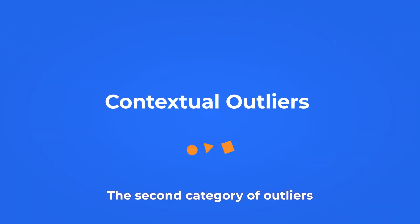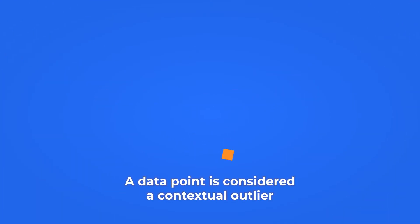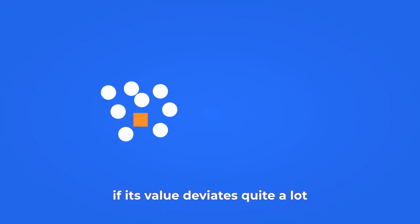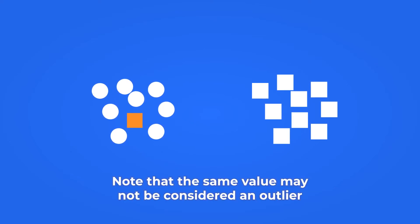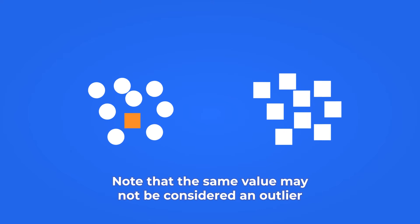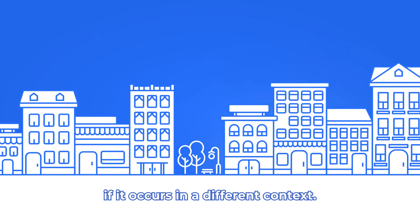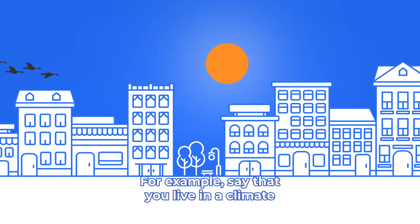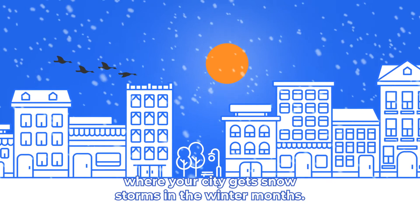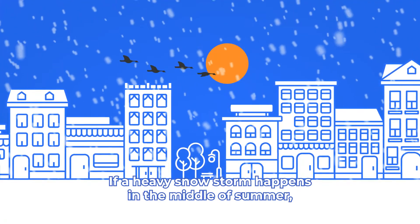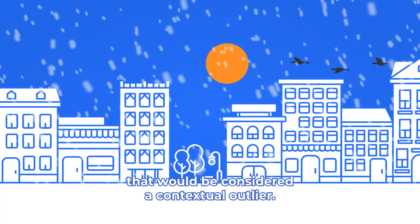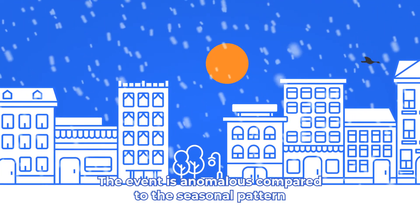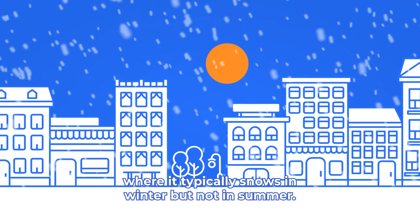The second category of outliers is contextual or conditional. A data point is considered a contextual outlier if its value deviates quite a lot from the rest of the data points that are in the same context. Note that the same value may not be considered an outlier if it occurs in a different context. For example, say you live in a climate where your city gets snowstorms in the winter months. If a heavy snowstorm happens in the middle of summer, that would be considered a contextual outlier — the event is anomalous compared to the seasonal pattern where it typically snows in winter but not in summer.